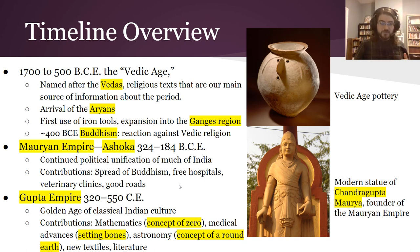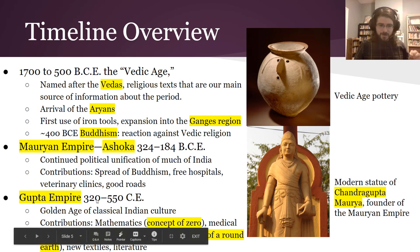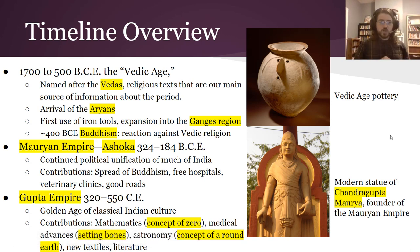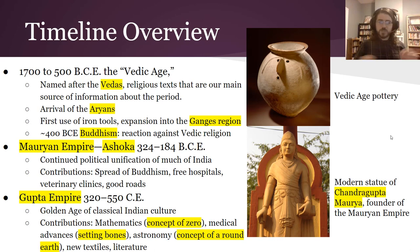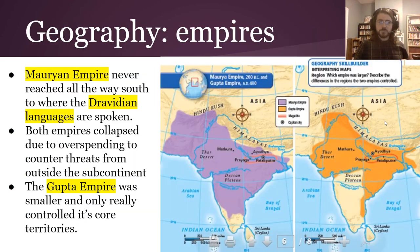Later, the Gupta Empire — about 500 years later — that's the golden age of classical Indian culture. You see contributions like the idea of zero, which is incredibly useful; how to set bones after you break them; the idea of a round earth being fully fleshed out as a theory; and also some new textiles and literature that pop up during this period.